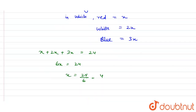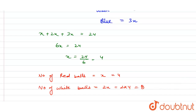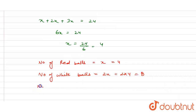Now we put the values of x to get red, white and blue ball counts. Number of red balls equals x, which equals 4. Number of white balls equals 2x, which equals 2 times 4, equals 8. Number of blue balls equals 3x, which equals 3 times 4, equals 12.